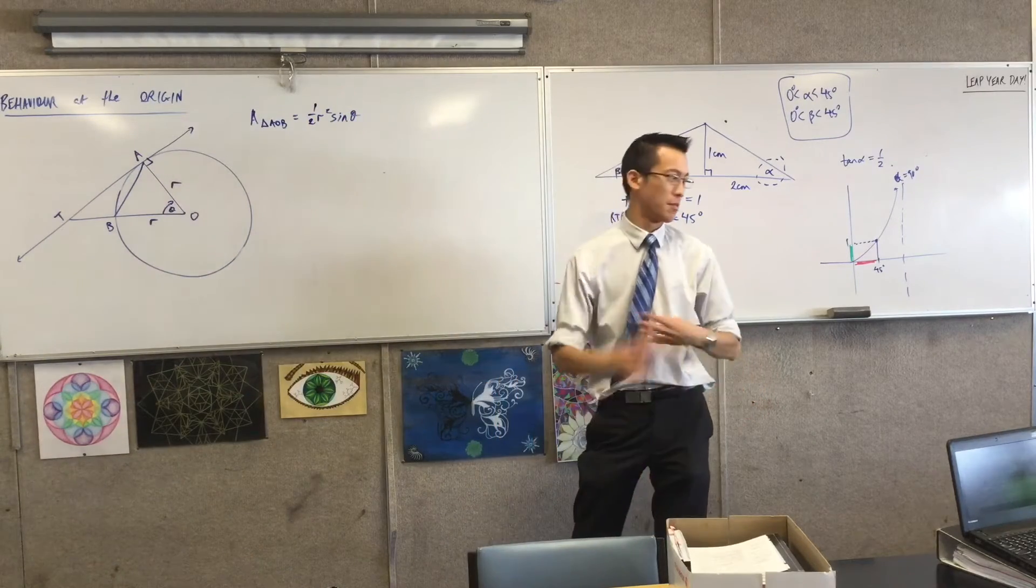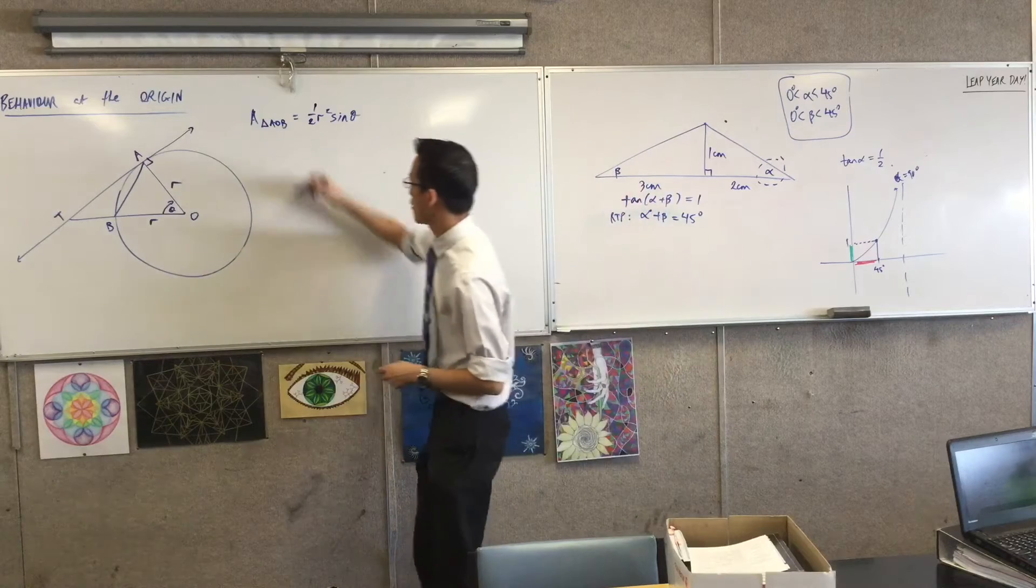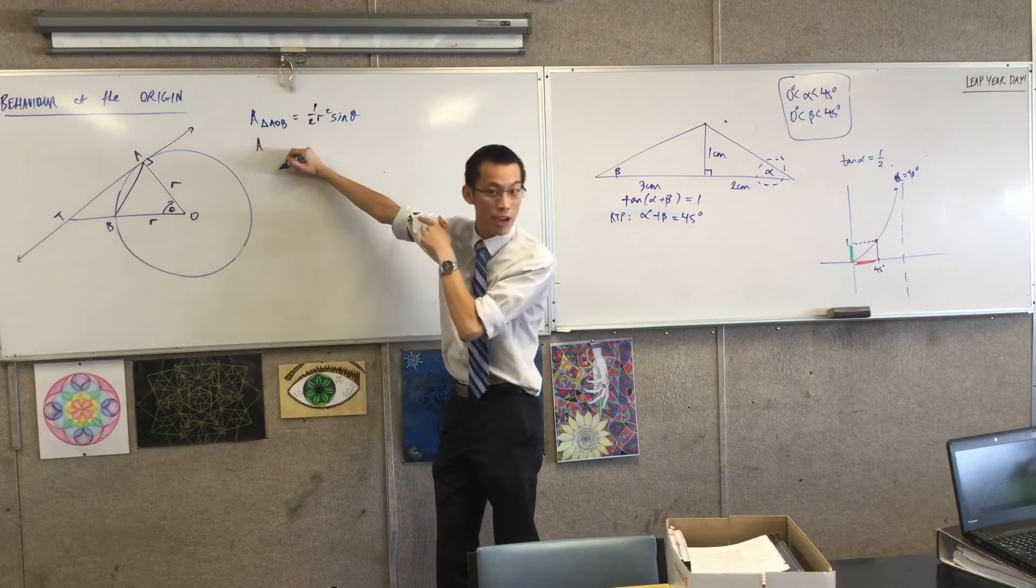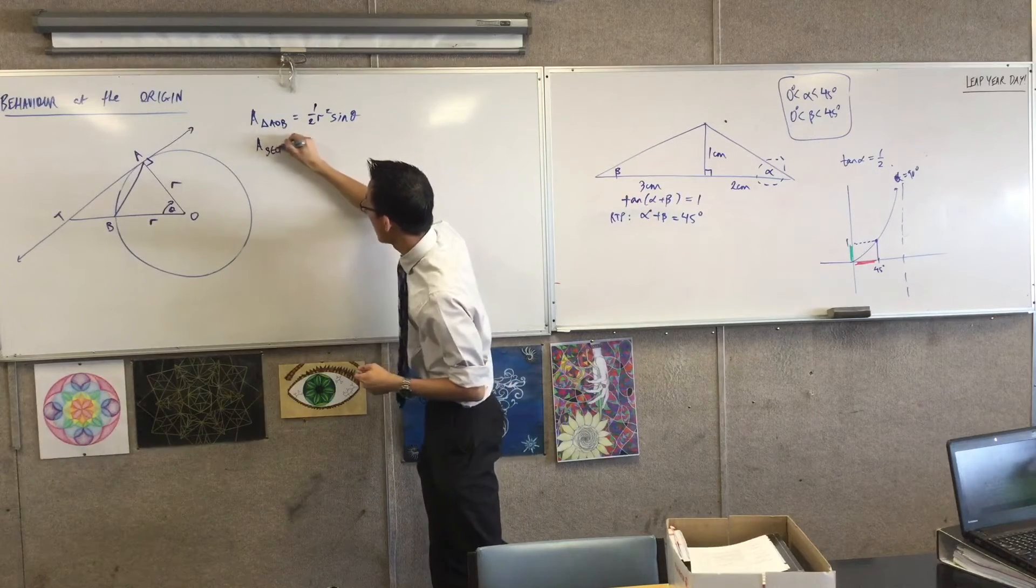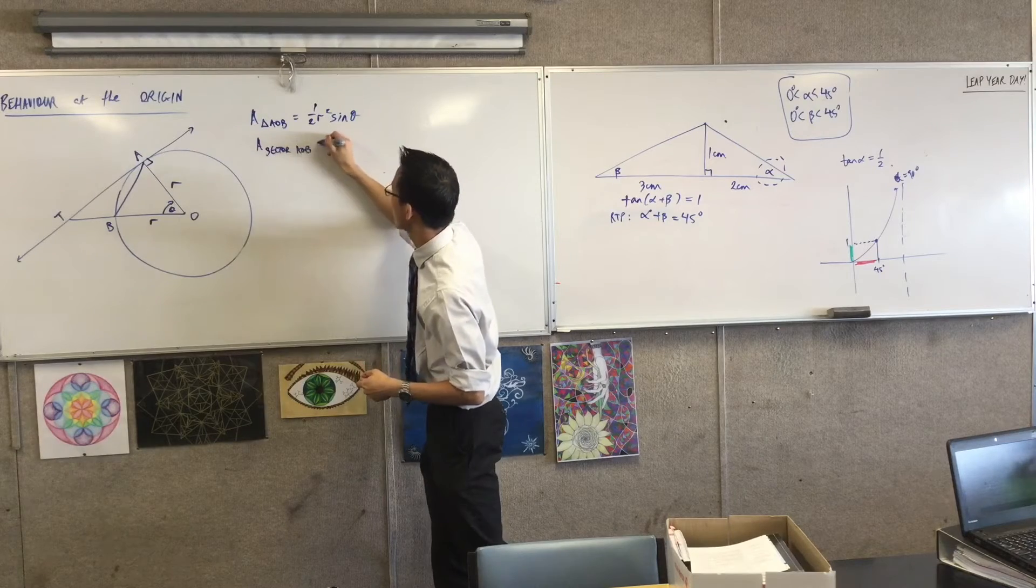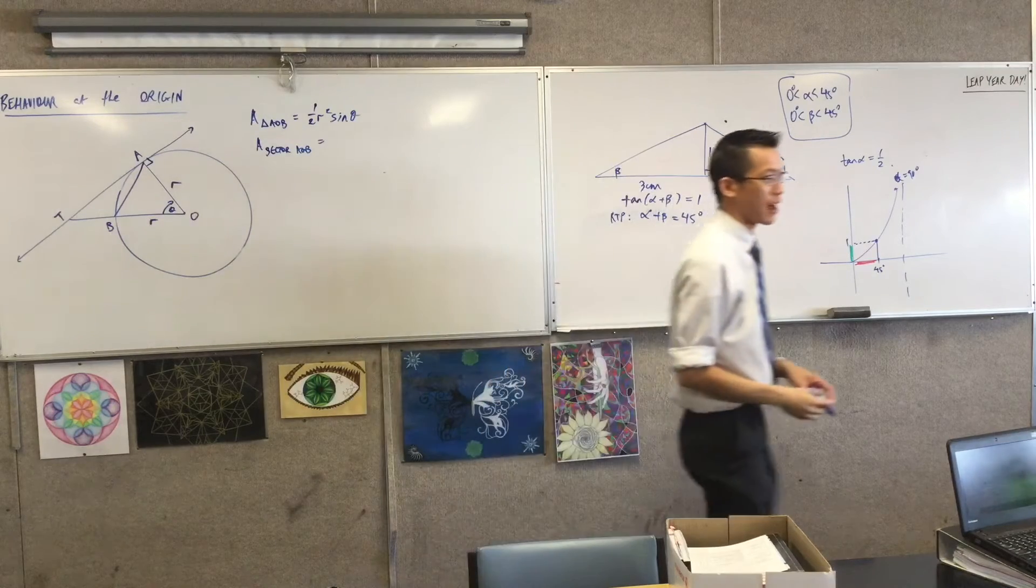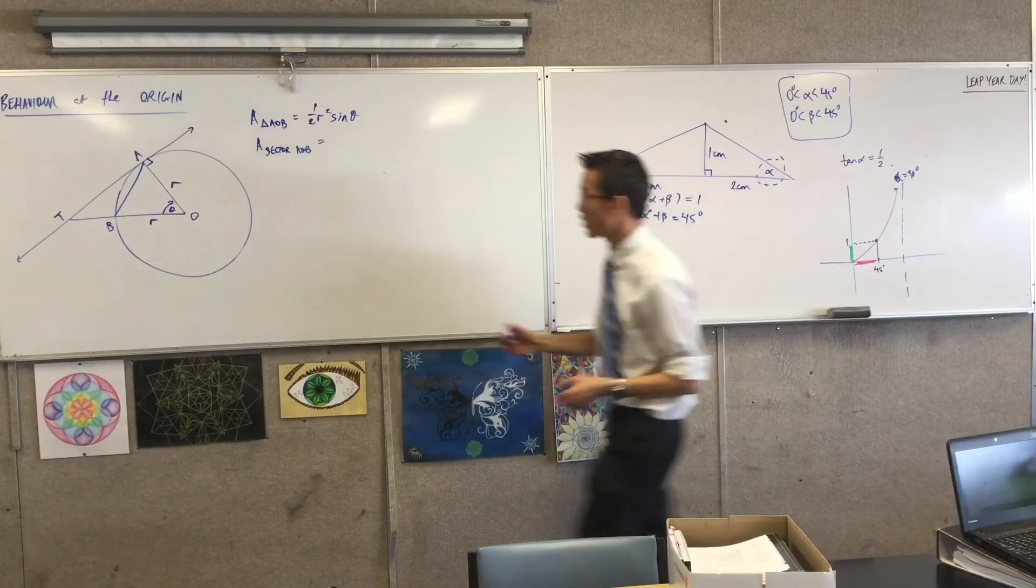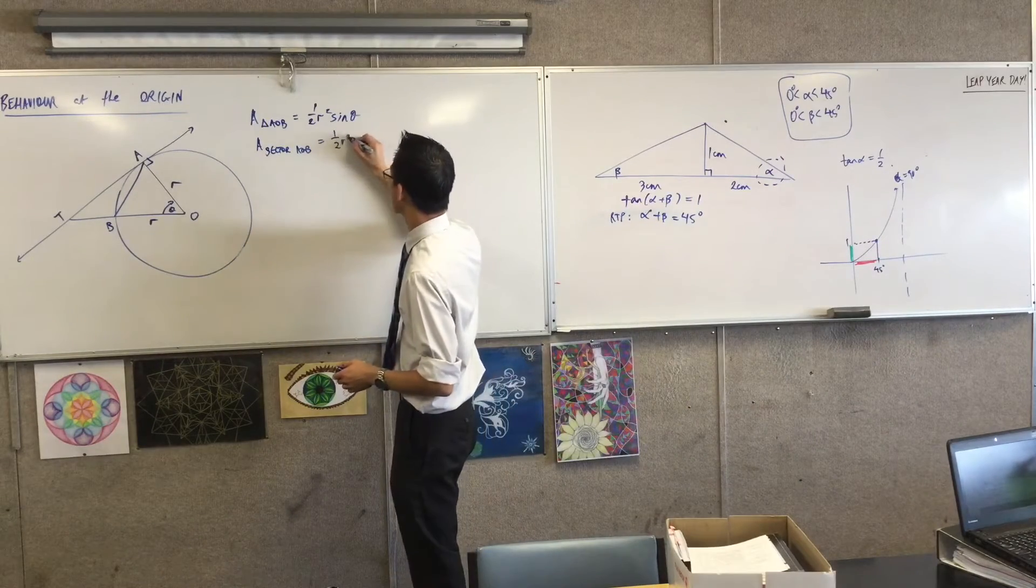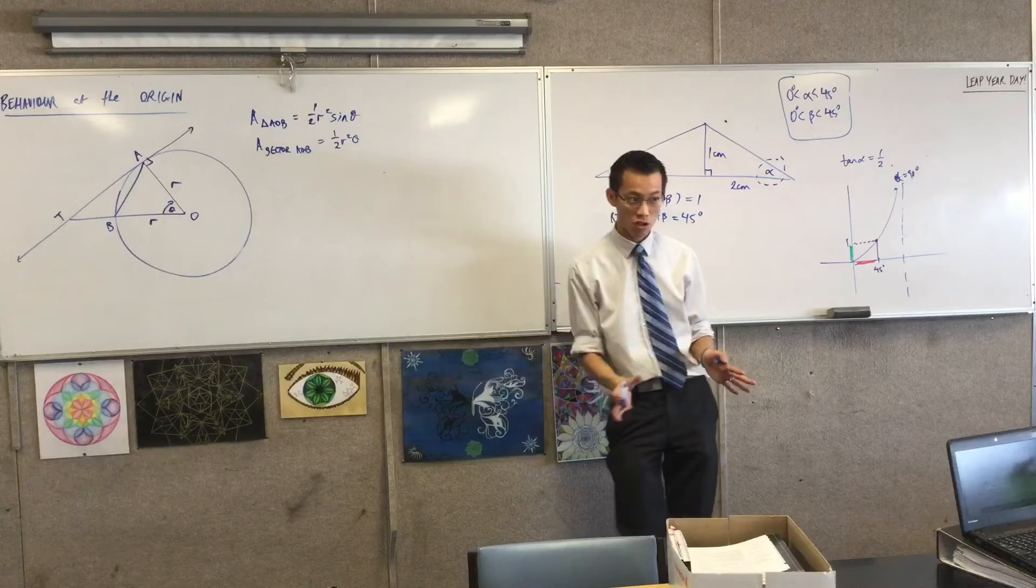Just as easy to quote, and it's important - we're dealing with radians here. So therefore, if I talk about not triangle AOB but sector AOB, I have a formula for this. What's the area of the sector? Half R squared theta. Very good. That's not complicated.